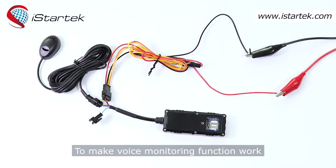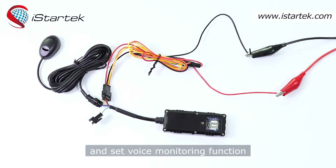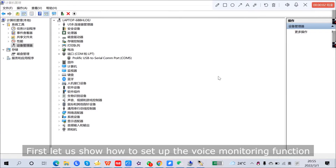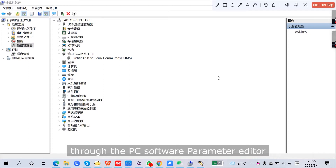To make the voice monitoring function work, we need to set the authorized phone number and set the voice monitoring function by PCSoftware Parameter Editor or SMS command. First, let us show how to set up the voice monitoring function through the PCSoftware Parameter Editor.